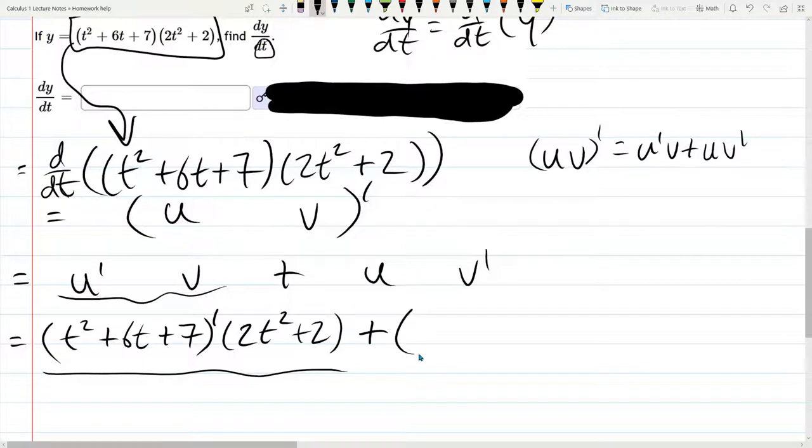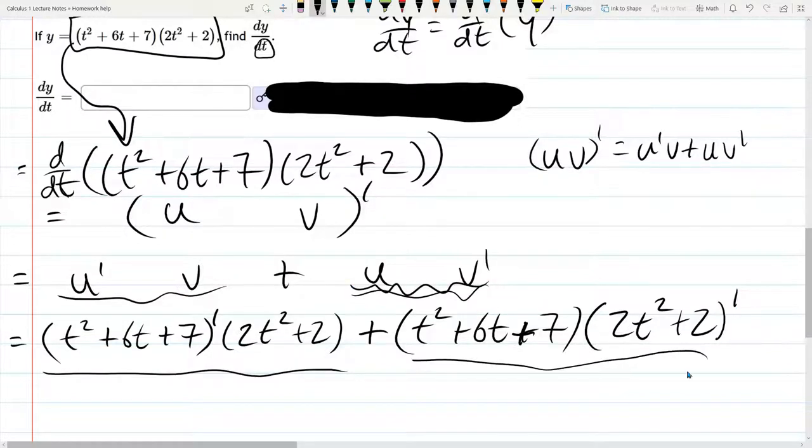Plus u, so that's t squared plus 6t plus 7 times, that one is not primed, times 2t squared plus 2. This one is primed. And that is the second 2 right there.